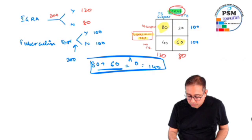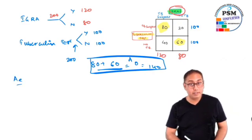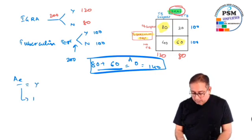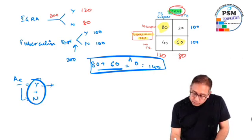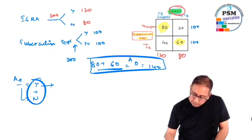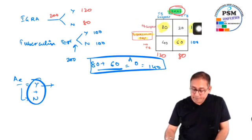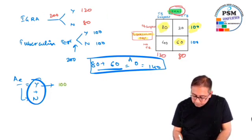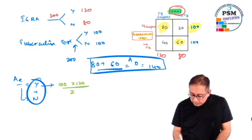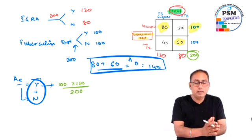Now you need to calculate the expected agreement. Expected agreement, how many times yes and how many times no? Just add them. So just look at the screen please. These 100 people were yes by tuberculin test, TB suspect yes, and these 120 people were TB suspect by IGRA. So for yes, it is 100 times 120 divided by 200, because that is the total number. That is zero zero cut two six, so the answer is 60.